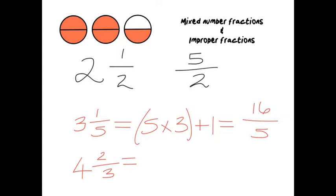Let's try that again at the bottom. We've got 4 wholes and 2 thirds. Again, let's take our denominator, our bottom number. That's 3 times by our whole number which is 4. 3 times 4 is 12. This time you're adding on 2 from the top. So that would be 14 thirds.